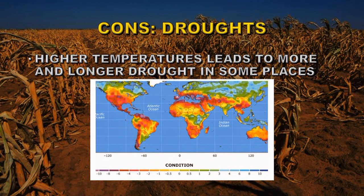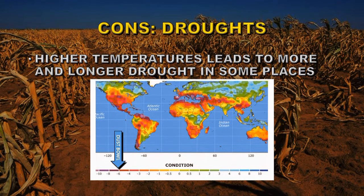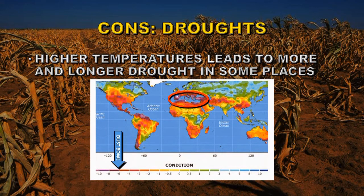Higher temperatures from increased carbon dioxide generally lead to more and longer lasting droughts in some places. This map shows the drought potential over the next 30 years for various areas of the earth. To give you some idea what this scale means, minus six on this scale was the equivalent level of the dust bowl in the 1930s in central US. The area around the Mediterranean seems particularly vulnerable, going to dust bowl levels or beyond in that time frame. These are some of the most productive agricultural areas on the planet, and we'll be losing a great deal of agricultural capacity in those areas.